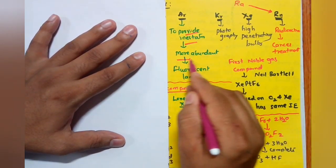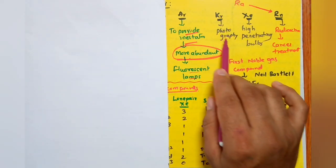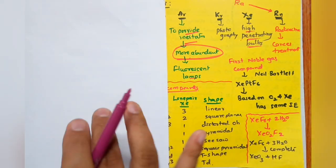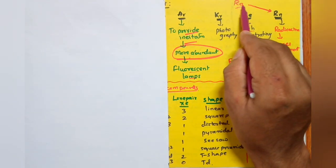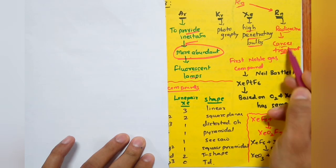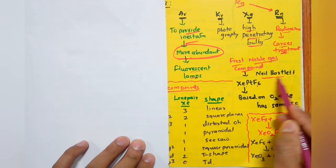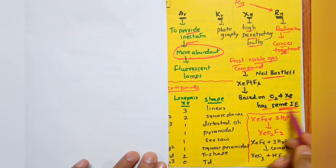Neon is used in fluorescent bulbs and advertising bulbs because it can carry extremely high current. Argon provides inert atmosphere in welding and is the most abundant noble gas; also used in fluorescent bulbs. Krypton is used in photography. Xenon is used in high-penetrating bulbs in aircraft. Radon is obtained from radium, is radioactive, and is used in cancer treatment.